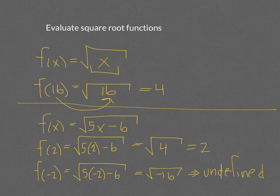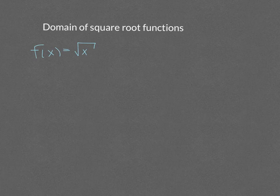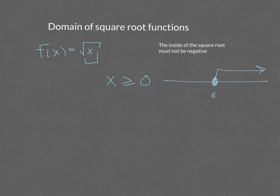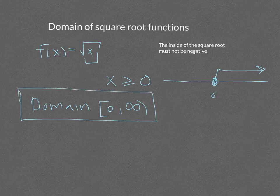That leads us into the domain of functions. For f(x) equals the square root of x, the inside of the square root must not be negative, so x must be greater than or equal to zero. Sketching that on a number line, we go from zero to infinity. We write the domain in interval notation since an interval best describes the domain.